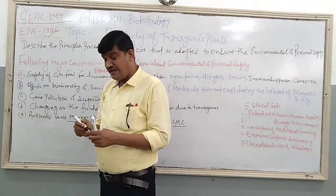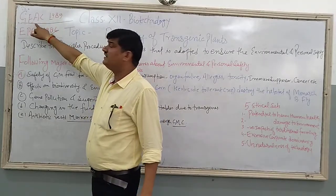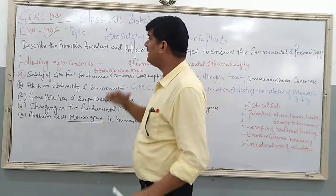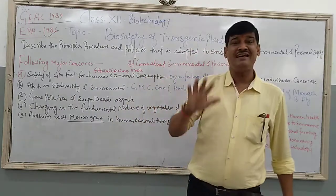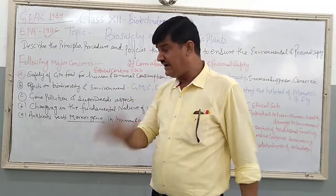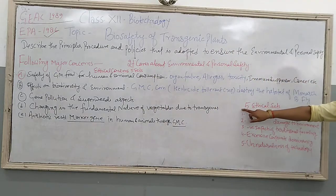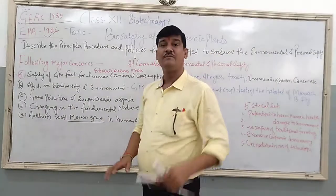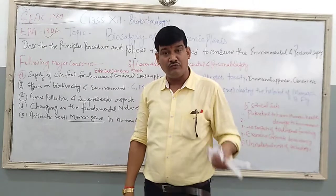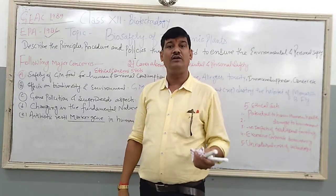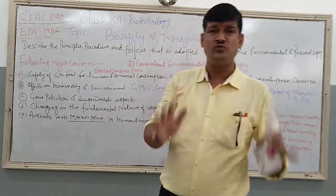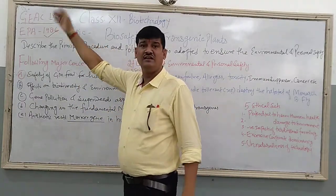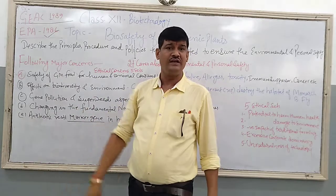The main role of this Genetic Engineering Approval Committee is that whenever a new crop or new GMOs or transgenic crops are introduced in the environment, they are assessed and thoroughly checked. More importantly, they are checked against the five ethical criteria of the crop plants — whether the plant is suitable for the environment, eco-friendly, and has no side effects on the human body or other animals. After the approval from the GEAC, the crop plants are introduced and commercialized.